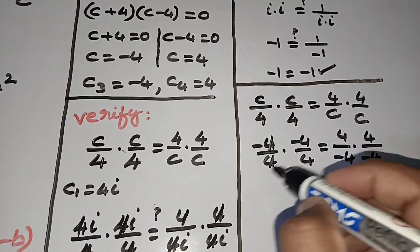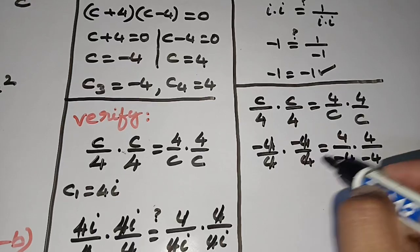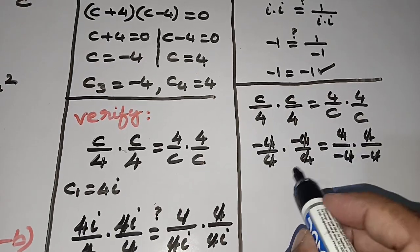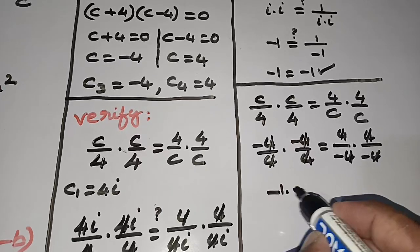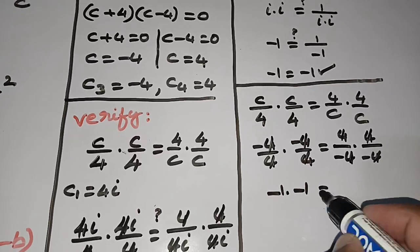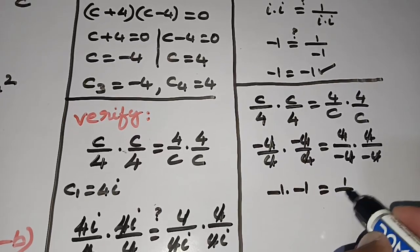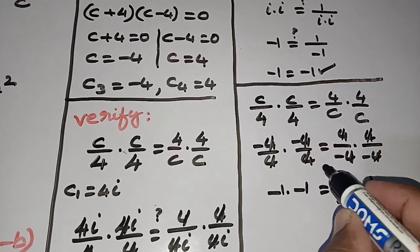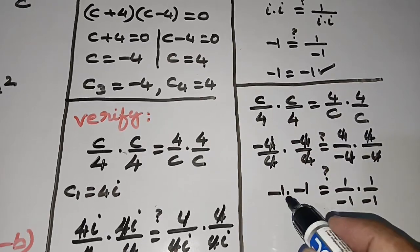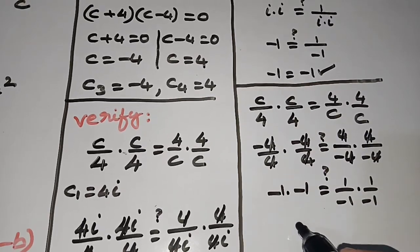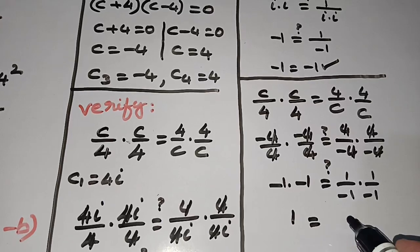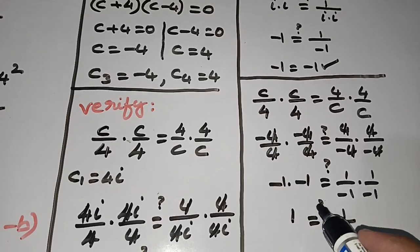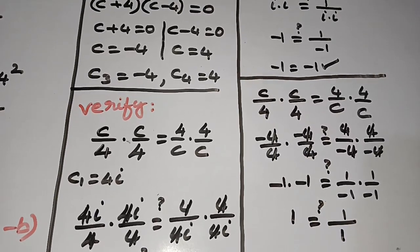Cancelling 4s: (-1) times (-1) equals (1/(-1)) times (1/(-1)). Minus times minus is +1 on the left, and on the right 1 divided by (minus of minus) is 1 divided by +1.